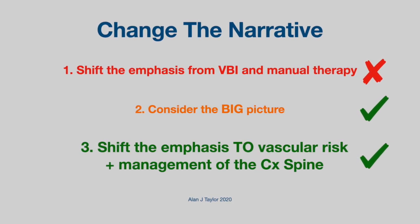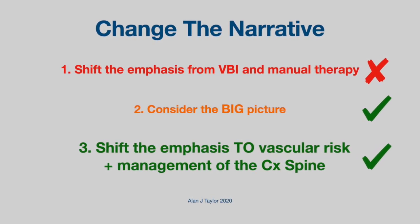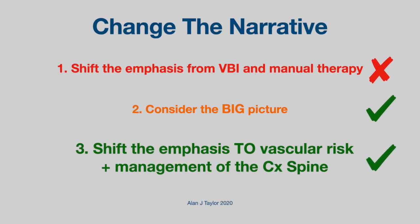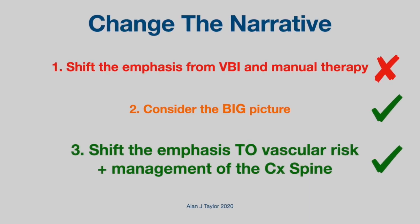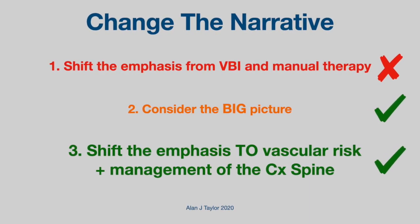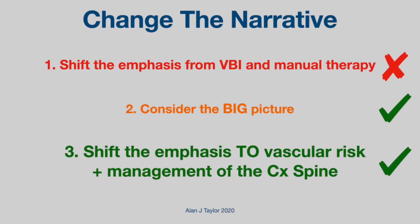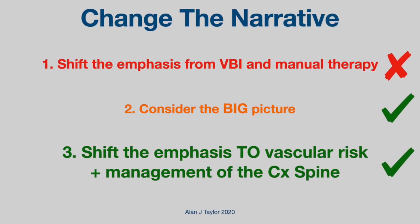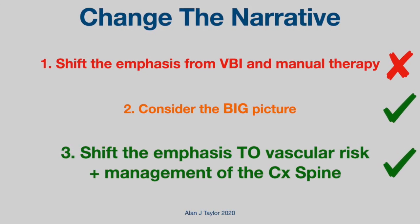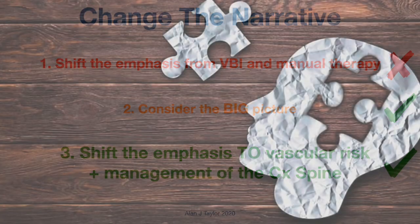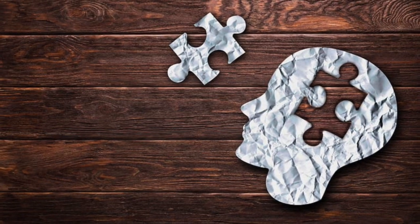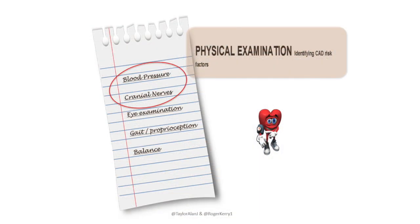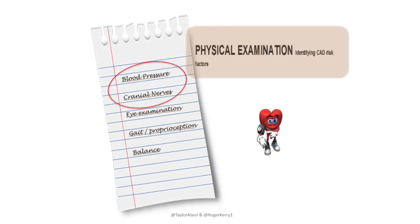The key thing is to shift the emphasis from VBI and manual therapy and begin to consider the big picture, then move to a logical way forward — which would be to shift the emphasis to vascular risk, thinking about how we might look at that and management of the cervical spine in general with any form of treatment at all. Let's look at the pieces of the jigsaw that are missing here and try to put it all together. Some of the things we need to consider are whether we might want to add blood pressure recording into the physical examination.